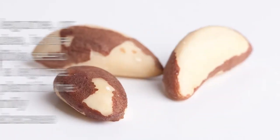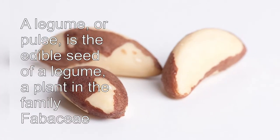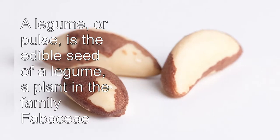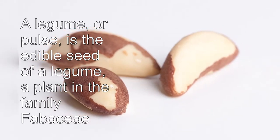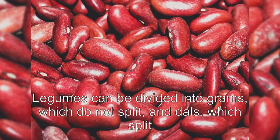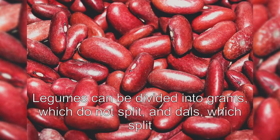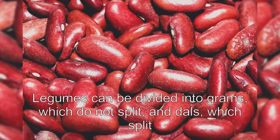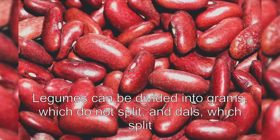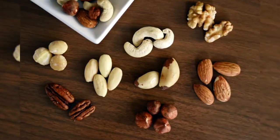A legume, or pulse, is the edible seed of a legume — a plant in the family Fabaceae. Legumes can be divided into grams, which do not split, and dals, which split. Although some beans can be consumed raw, some need to be heated before consumption.